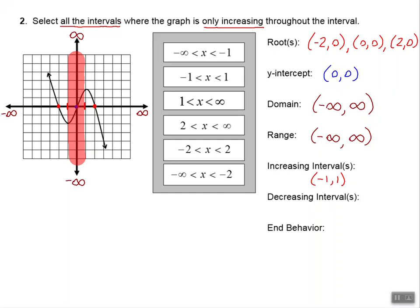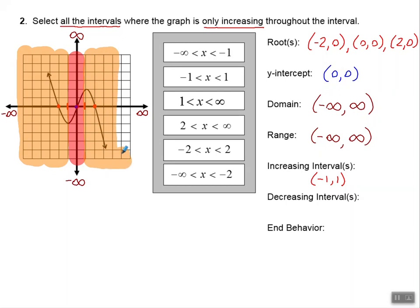Let's look at our decreasing intervals — that's everything else. We're decreasing on this side and on this side. We are decreasing starting all the way at negative infinity, decreasing until we get to the x-value of negative 1. Then we increase a little in the middle, then decrease more from positive 1 all the way to positive infinity. If we have multiple intervals, we link them together with a union symbol.